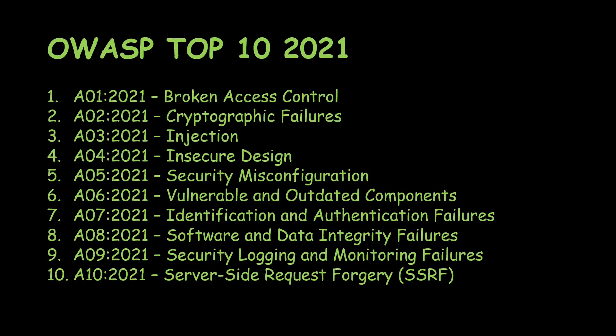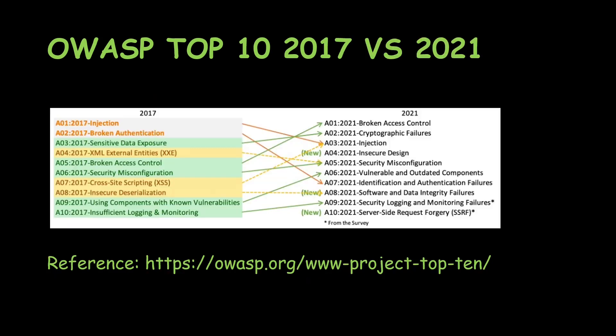Hello everyone, this is Mirren Nuts. Hope you guys are doing well. Today we'll be continuing the OWASP Top 10 2021 video series. Today we'll be looking at the fourth risk, which is insecure design. The first three risks I've already covered in the previous videos — you can go and check those out. So let's get started.